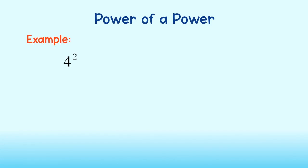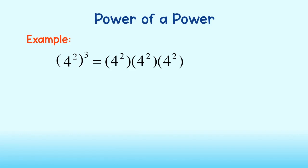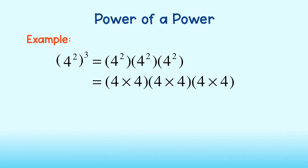First, let's take a look at the power of a power rule. For example, consider the monomial 4 squared to the third power. We can apply what we know about exponents and write 4 to the second power three times. We also know that 4 to the second power is just 4 times 4. We can rewrite our expression as 4 times 4 times 4 times 4 times 4 times 4, or 4 to the sixth power. But we don't have to go through all of those steps every time a number with an exponent is raised to a power.